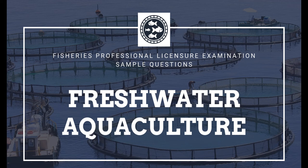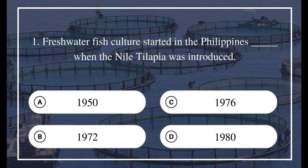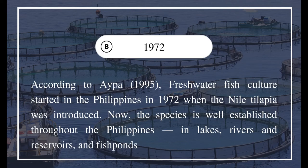Good day. These are the sample questions for the third topic under aquaculture: freshwater aquaculture. Question 1: Freshwater fish culture started in the Philippines blank, when the Nile tilapia was introduced. A) 1950, B) 1972, C) 1976, D) 1980. The answer is B) 1972. According to IPA 1995, freshwater fish culture started in the Philippines in 1972 when the Nile tilapia was introduced. The species is now well established throughout the Philippines in lakes, rivers, reservoirs, and fish ponds.